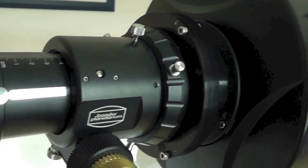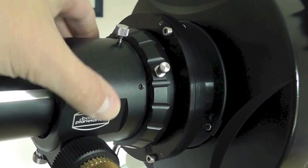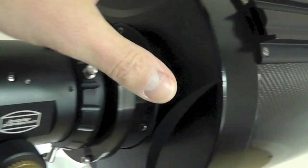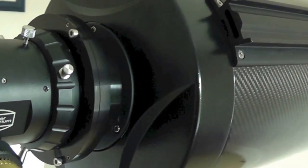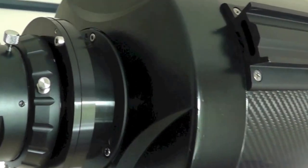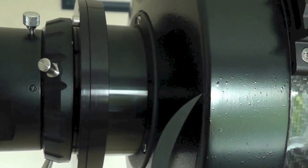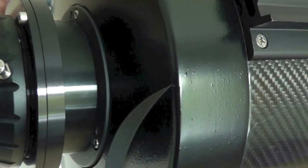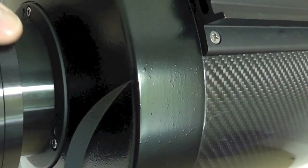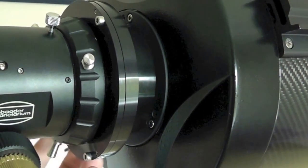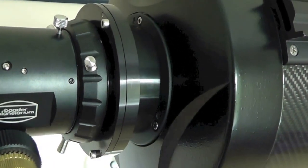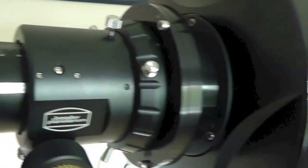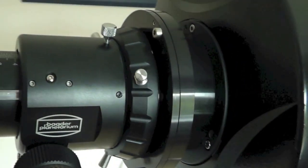What we're going to do in this step is collimate this focuser so that it is square with the scope. The way we do that is by adjusting this collimation ring that you don't actually get as part of the scope as standard. We're going to adjust the screws on here to get this perfectly aligned with the secondary mirror.